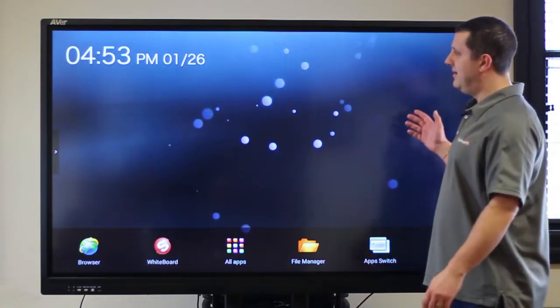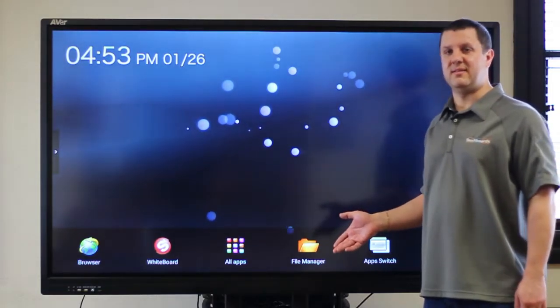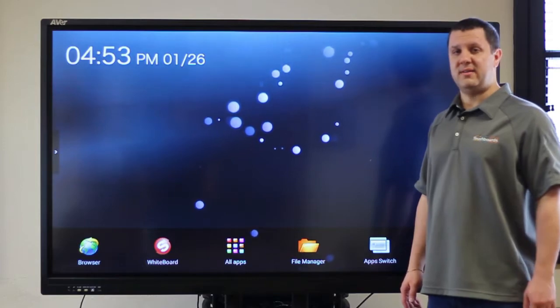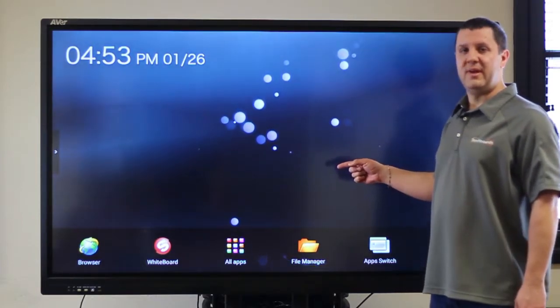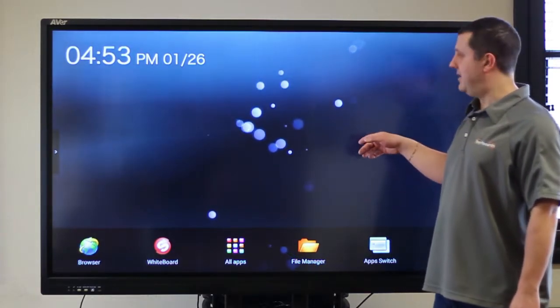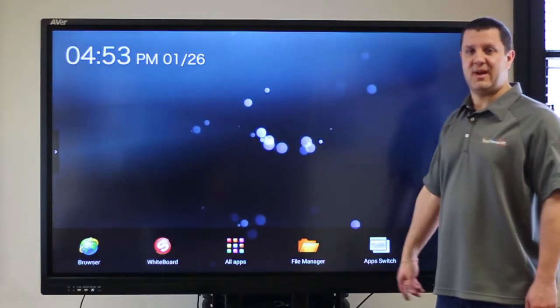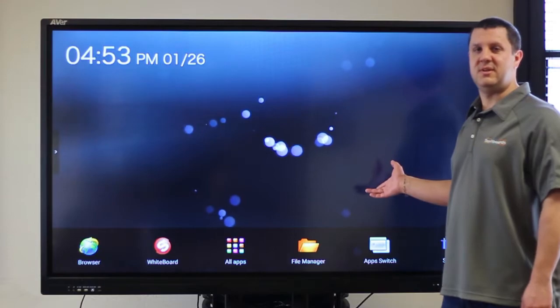Now this is a 75 inch, there's also a 65 and 86 inch. So this is the middle of the road model. It is interactive, it's a 4K display, it is touch sensitive and it's got anti-glare glass. Built into this is an Android operating system, which is what you see on screen behind me.